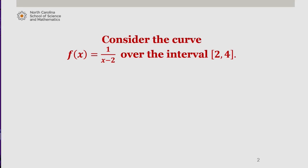Consider the curve f of x equals 1 over x minus 2 over the interval 2 to 4, as we saw in our lesson. If we were interested in evaluating the integral of the function over that interval, we need to account for the discontinuity at x equals 2, as we see in this graph. We have a vertical asymptote at x equals 2.